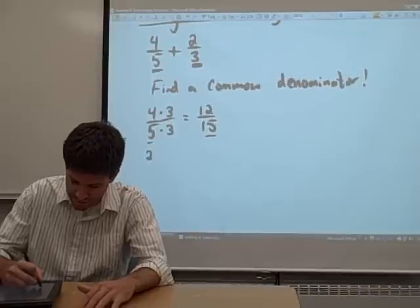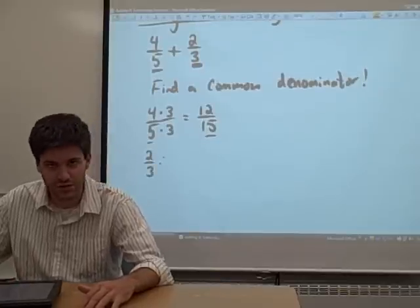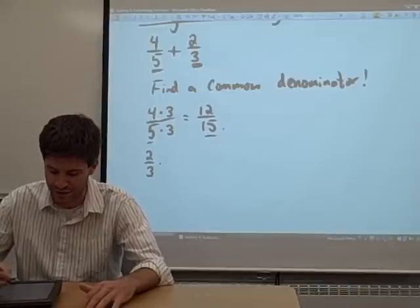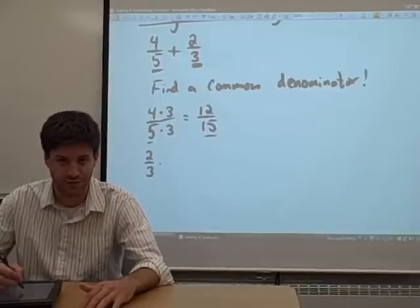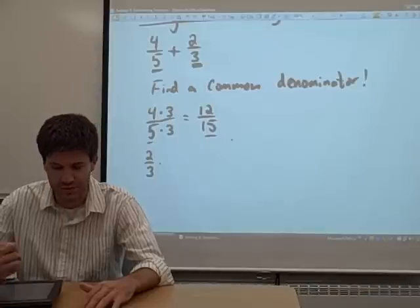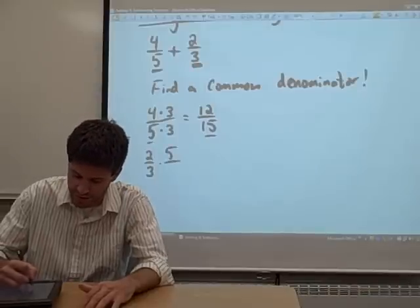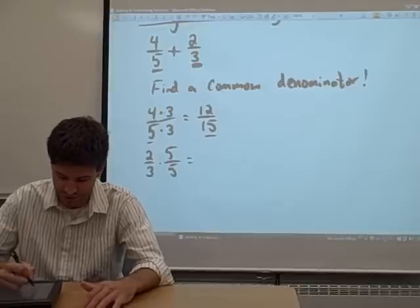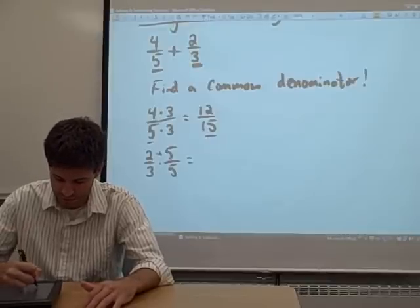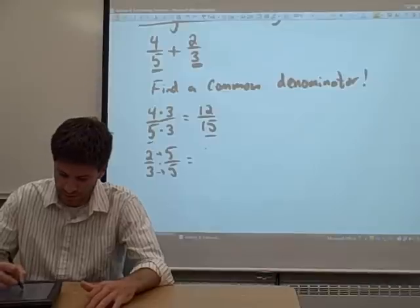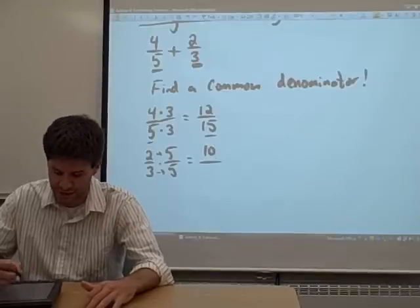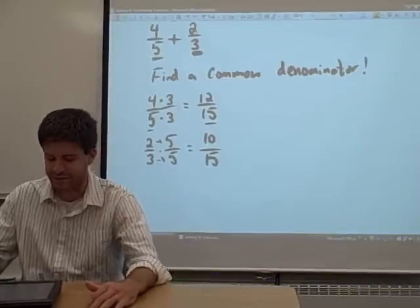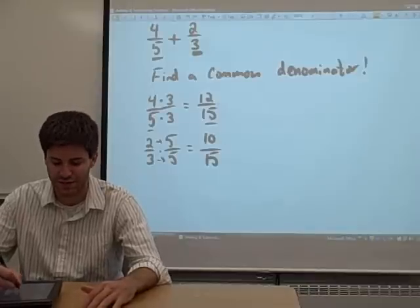Now let's look at two-thirds. What we can do to get this to have the same denominator as the four-fifths, as the twelve-fifteenths now, is we can multiply both the numerator and the denominator by five. What we get when we do this—we multiply straight across, of course, like we always do—two times five is ten, three times five is fifteen. Now what we have are two fractions that have the same denominator.